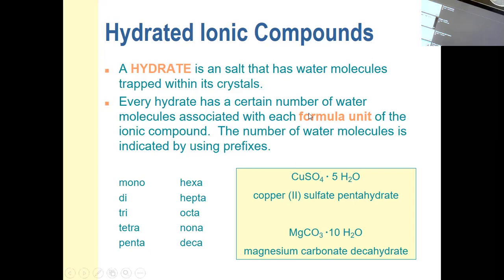Now when you have a hydrated salt, there is almost always a certain number of water molecules for every formula unit of the ionic compound. So for example, down below you see copper(II) sulfate, CuSO4 in the example down below. For every CuSO4 formula unit in a crystal structure, five water molecules are trapped. So we indicate the number of water molecules using prefixes. These prefixes should be familiar to you, most of them. If not, you'll just have to memorize them.